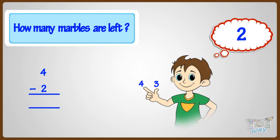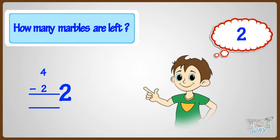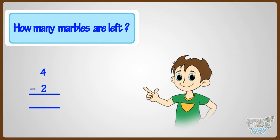Now count the fingers. One, two. Yeah! So two is your answer. We did it! Four minus two equals two.